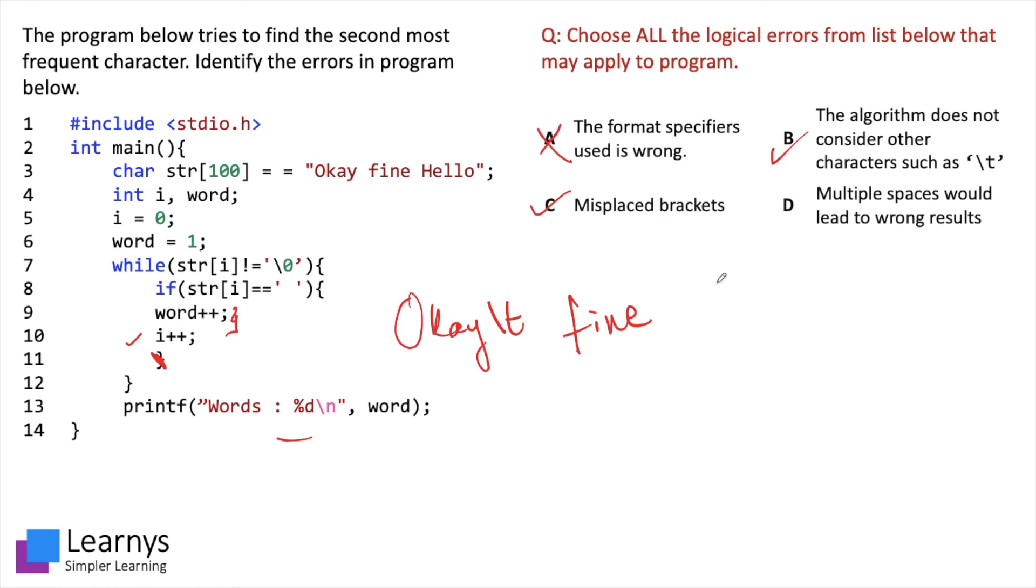The effect would be 'okay' and then four spaces or eight spaces and then the word 'fine'. So yes this is correct, this is a logical error in our program. Also option D says that multiple spaces would lead to wrong results. Again look at the code here. What is this particular code doing? The code is counting the number of times a space is hit. So if the string was just space space space, the answer would be three.